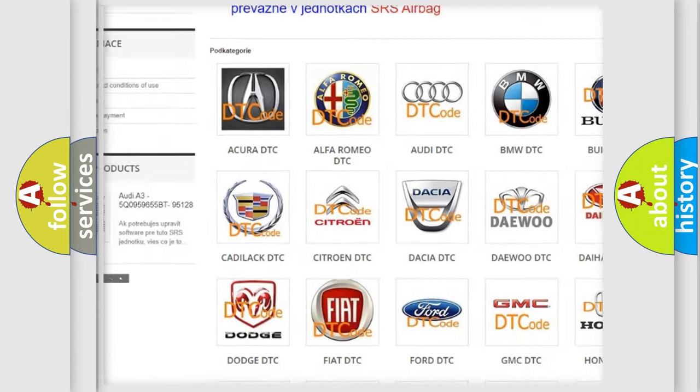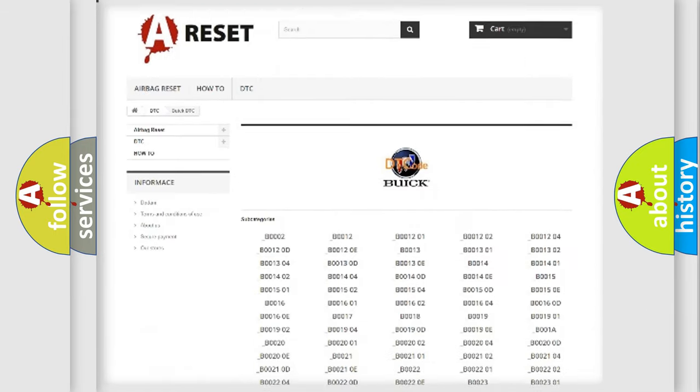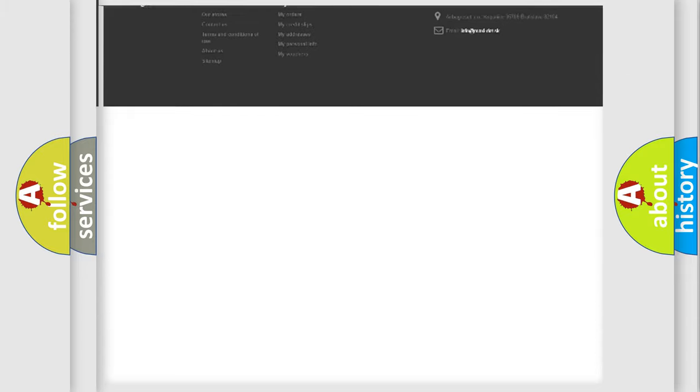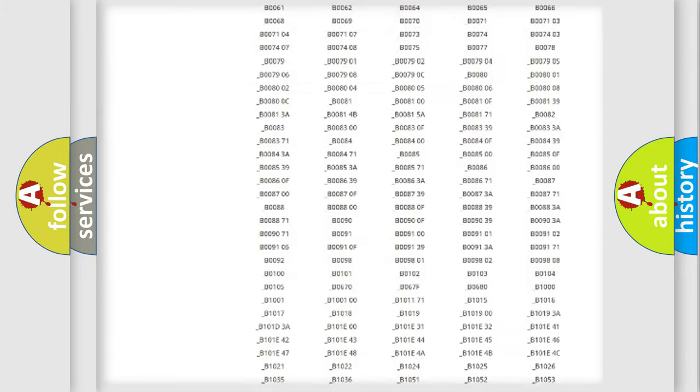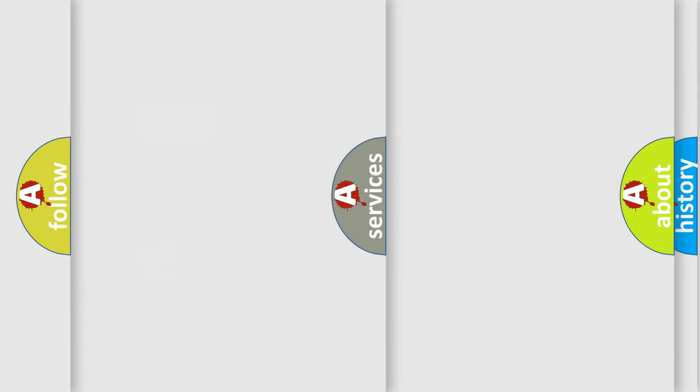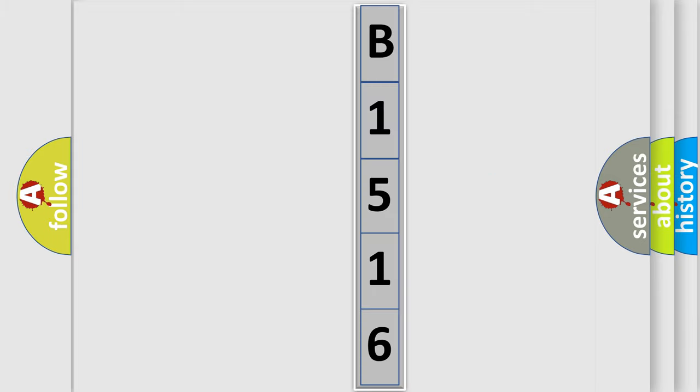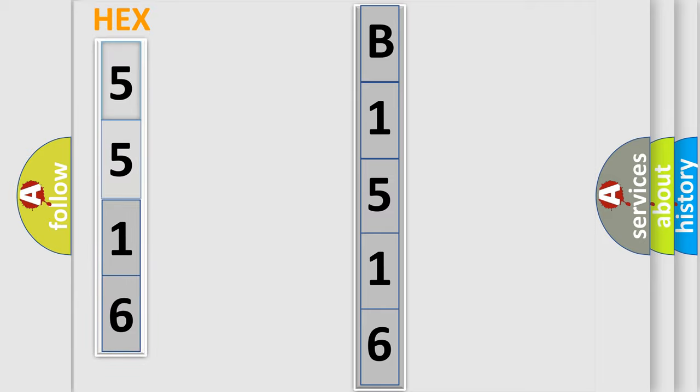Our website airbagreset.sk produces useful videos for you. You do not have to go through the OBD2 protocol anymore to know how to troubleshoot any car breakdown. You will find all the diagnostic codes that can be diagnosed in Buick vehicles, and many other useful things. The following demonstration will help you look into the world of software for car control units.